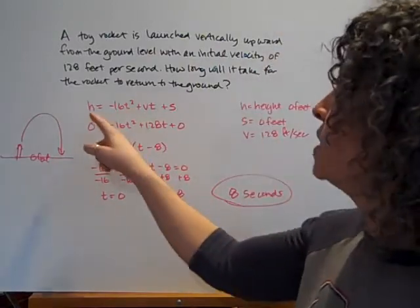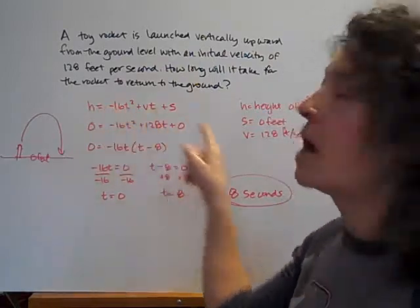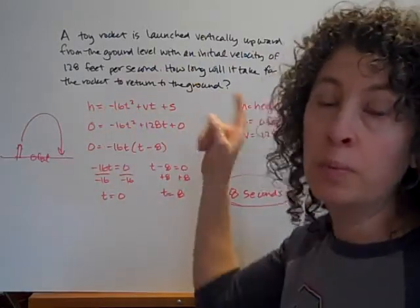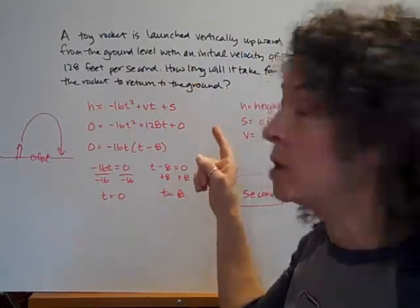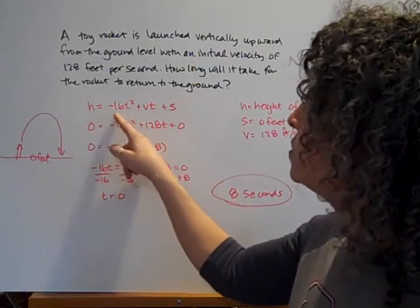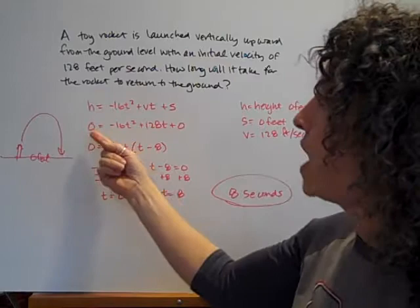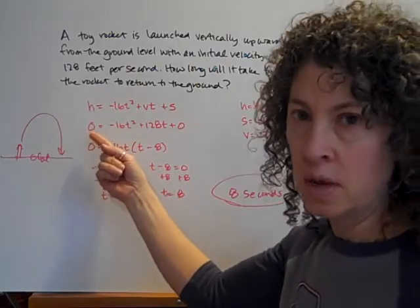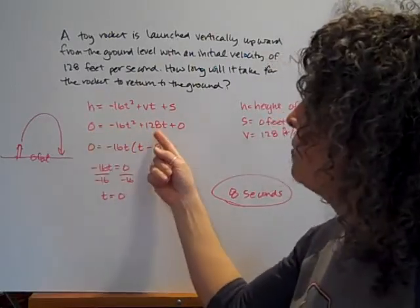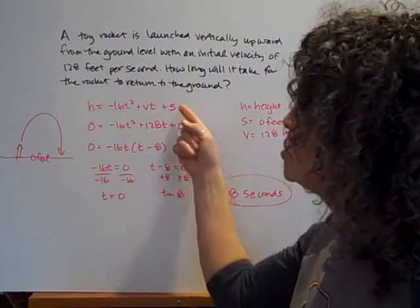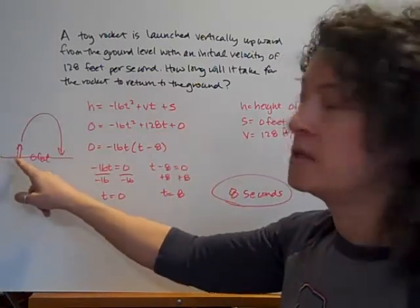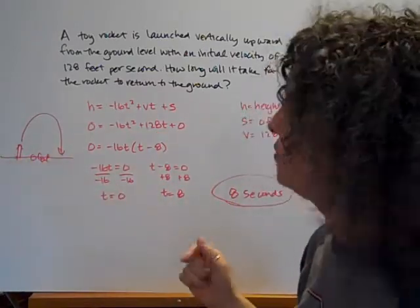My cat is back. Alright so I take my formula. You will not be required to memorize this formula. It will be right on any test or quiz that we work on. So I've got h equals negative 16t squared plus vt plus s. So the height we're asking about is zero. When is it going to get back to zero? My velocity is 128 and the starting height this rocket started at zero feet for a height.